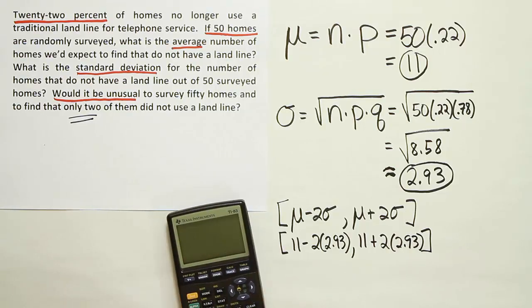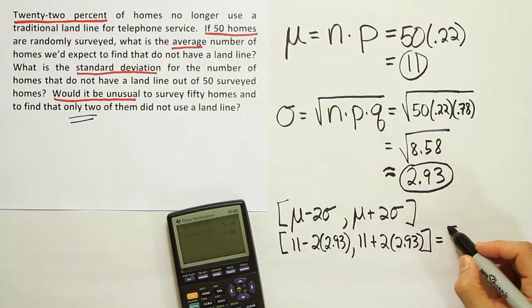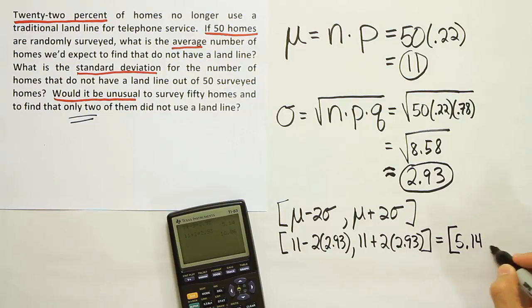I'll do 11 minus two times 2.93, and then I'll do that one more time, this time with a plus sign. 11 plus two times 2.93. When I'm done, I get this interval. I get 5.14, 16.86.